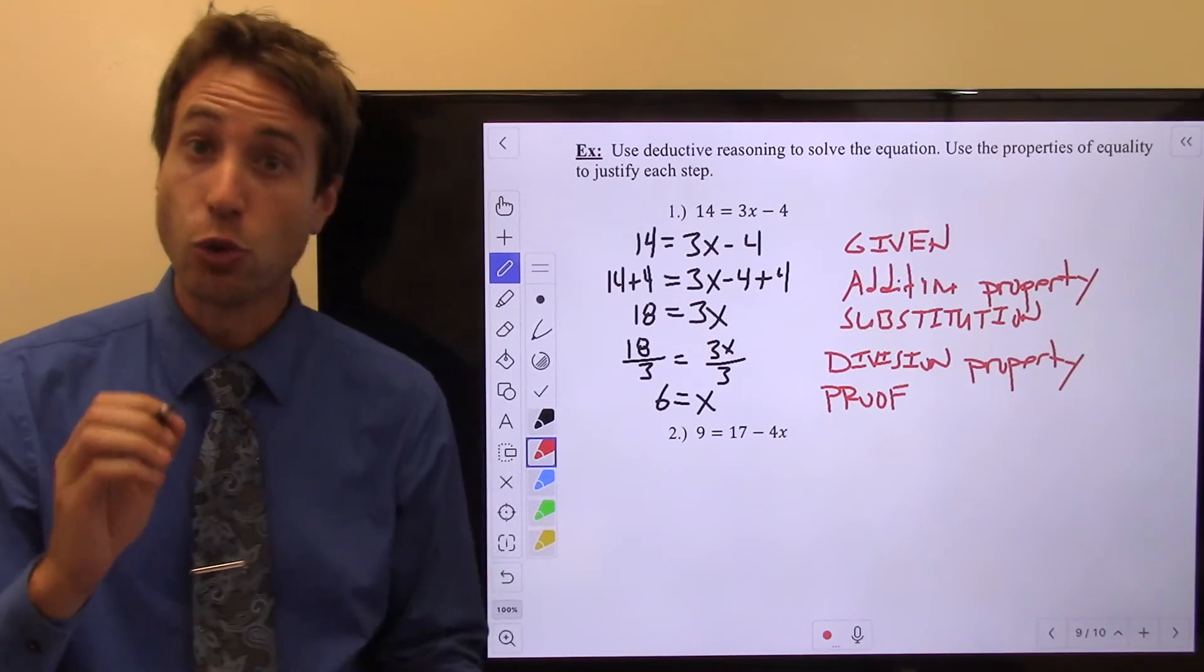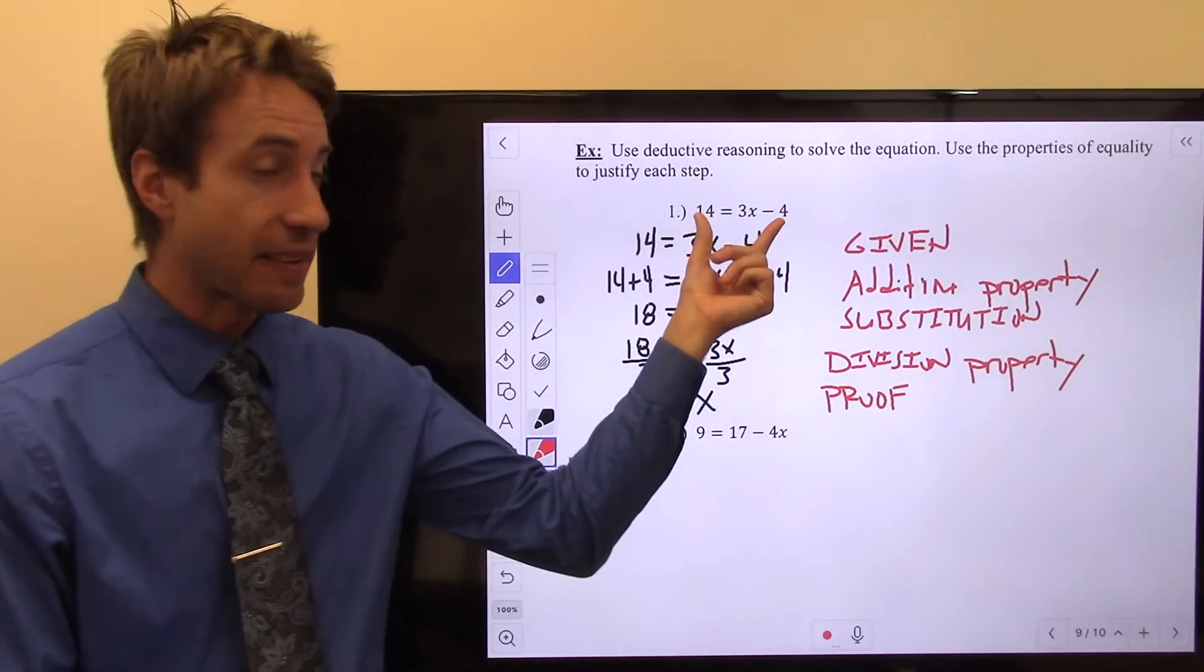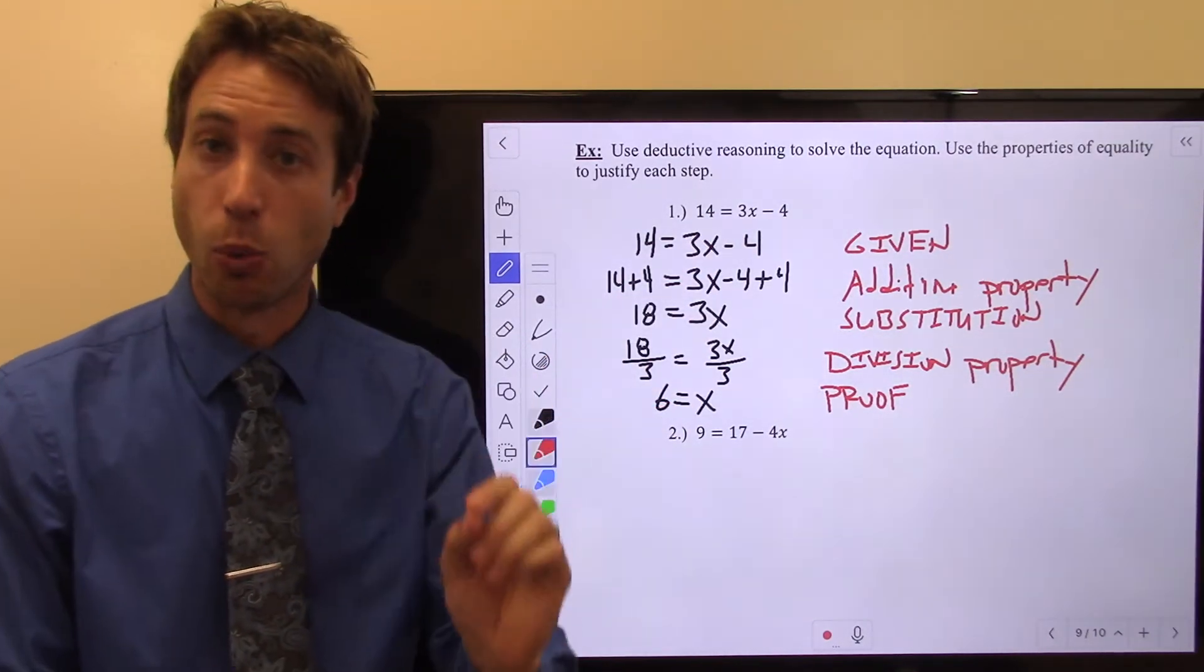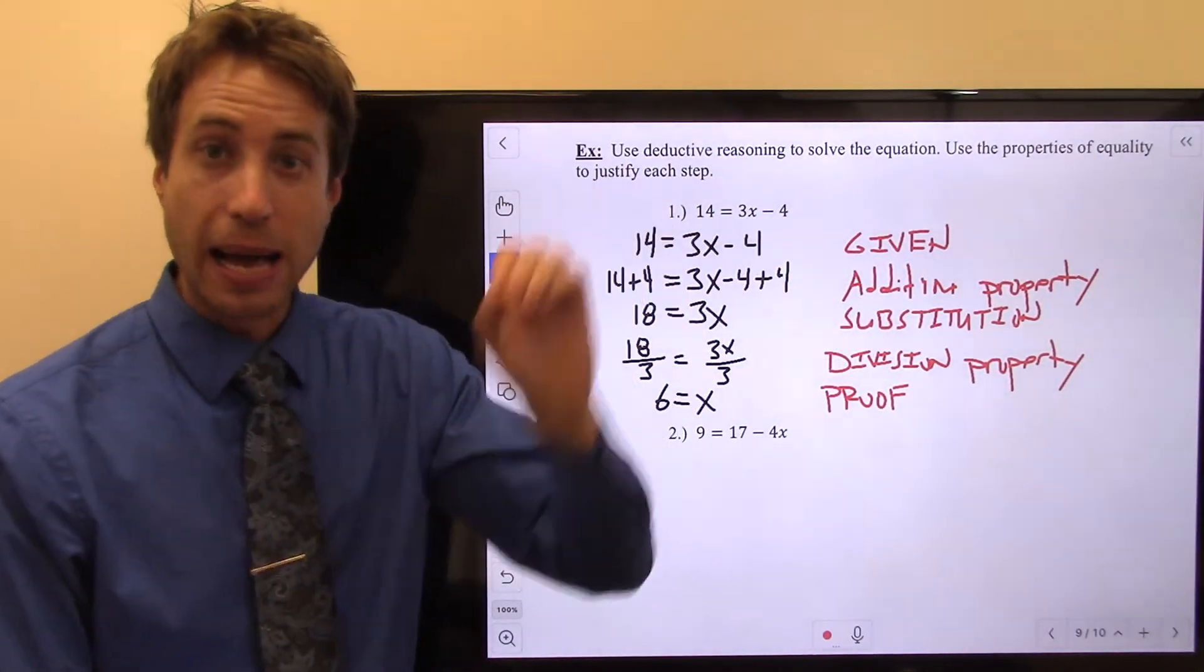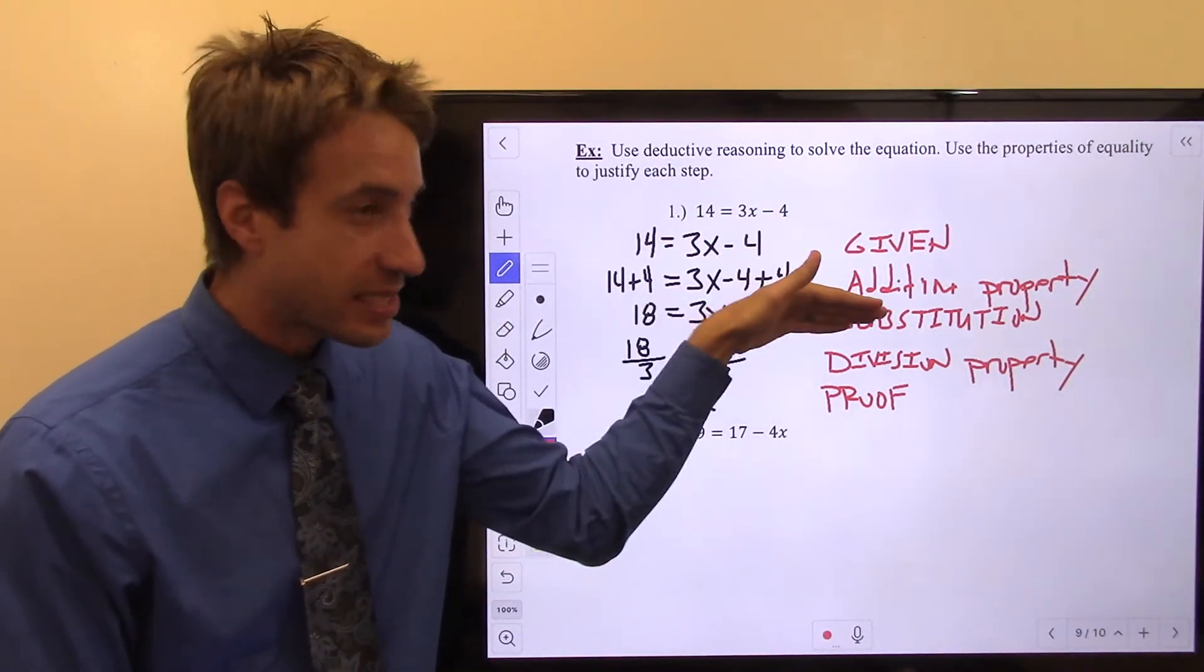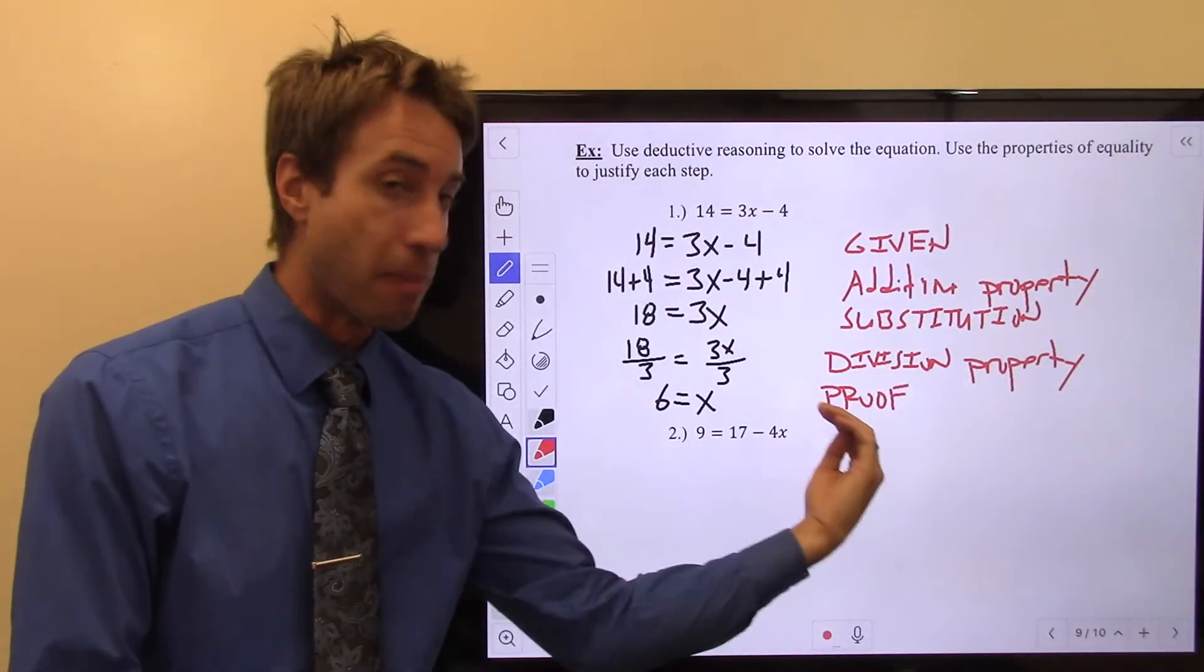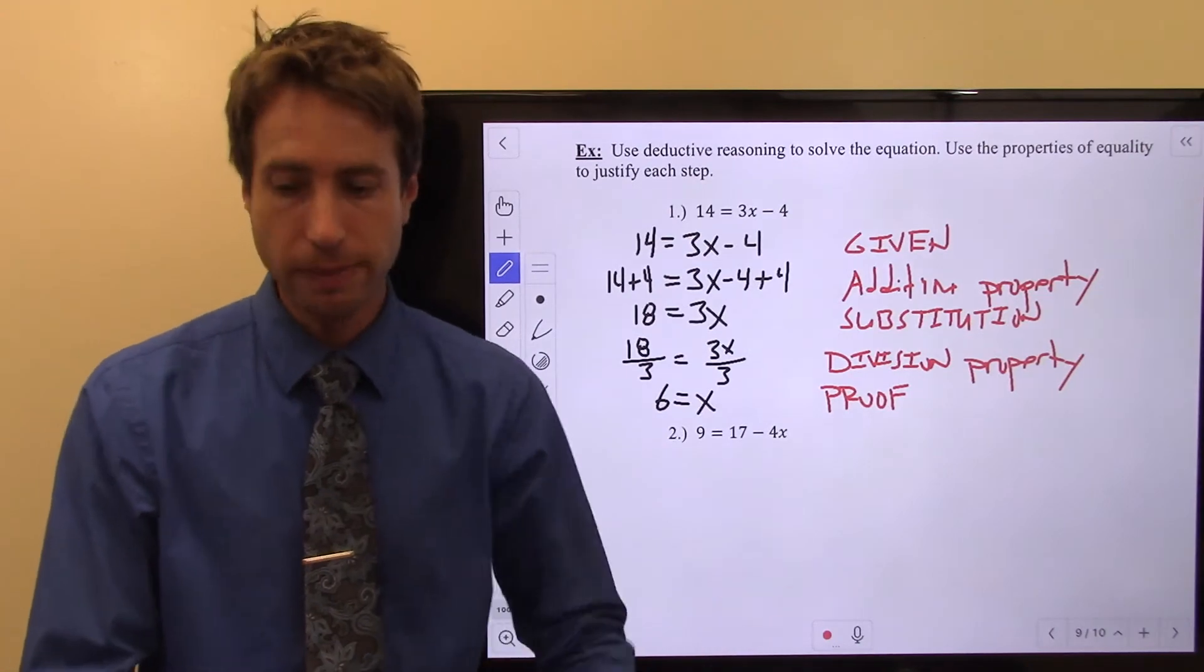So here's what I know. By deductive reasoning, given this statement, I have proven x is equal to 6. Why? Because every single step, I'm giving a justification that I know is true. And as long as every step, every fact that I use is true, my conclusion must also be true. Let's try another one.